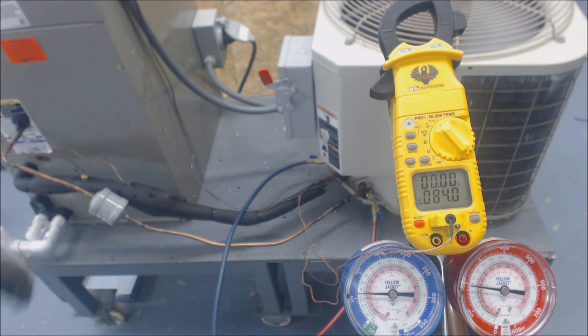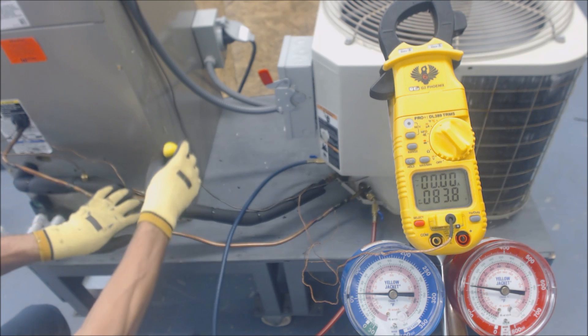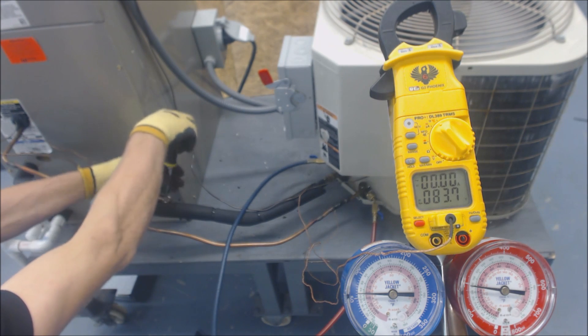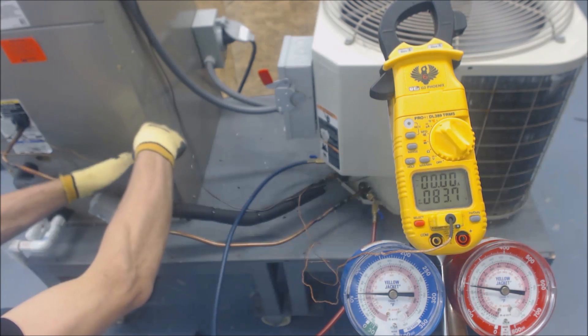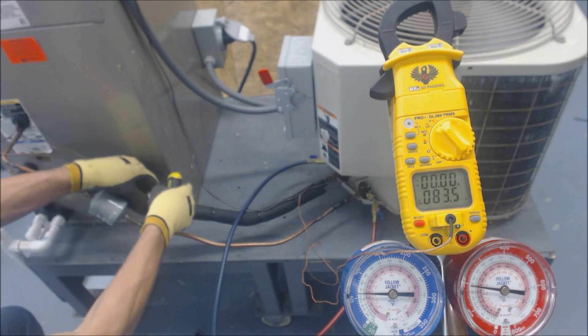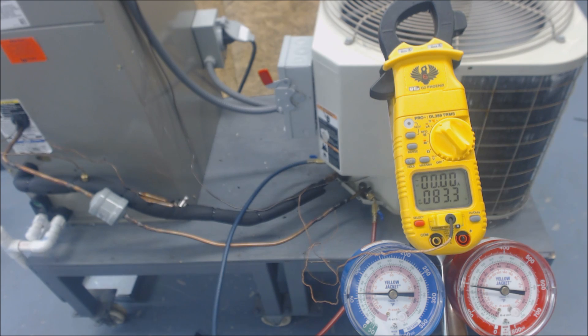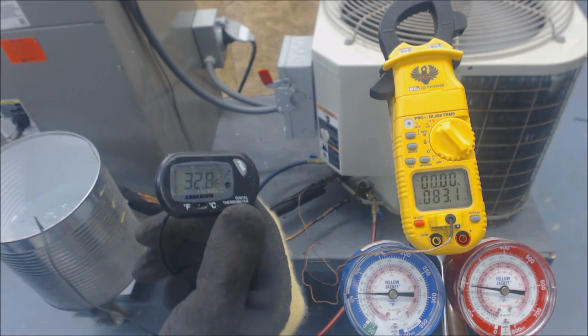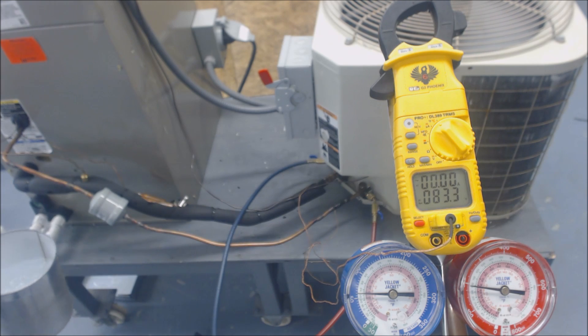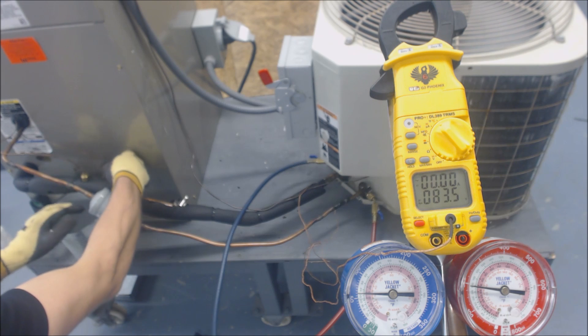Now we're going to play around with this TXV bulb. We're going to show as if the TXV bulb has lost the refrigerant. If the TXV bulb loses its refrigerant charge, it will not be able to apply force onto the head of the TXV. We're going to take the TXV bulb out and we're going to be putting it in ice water.